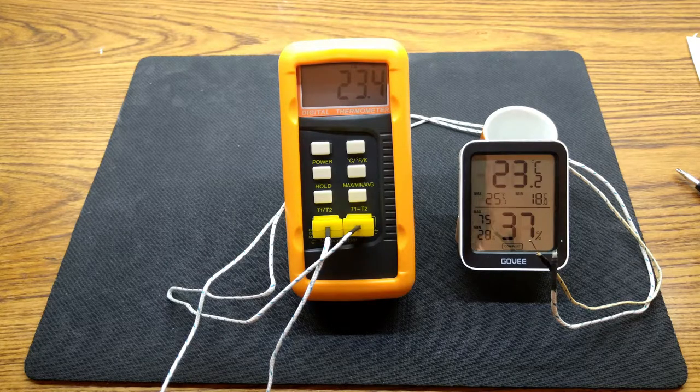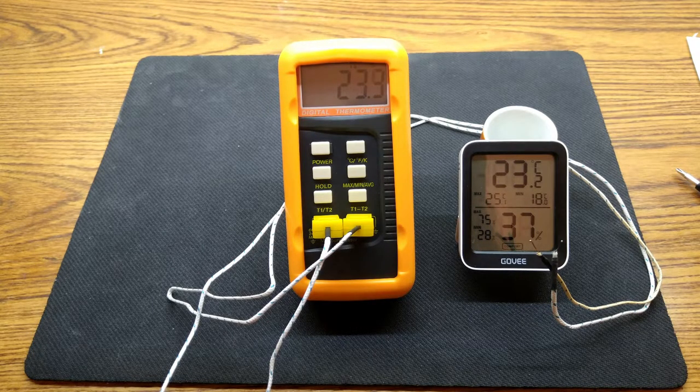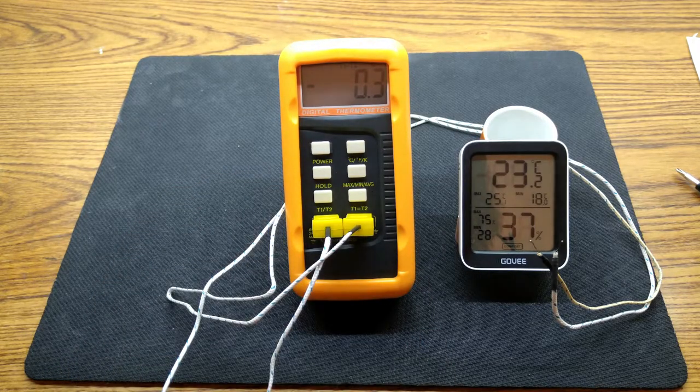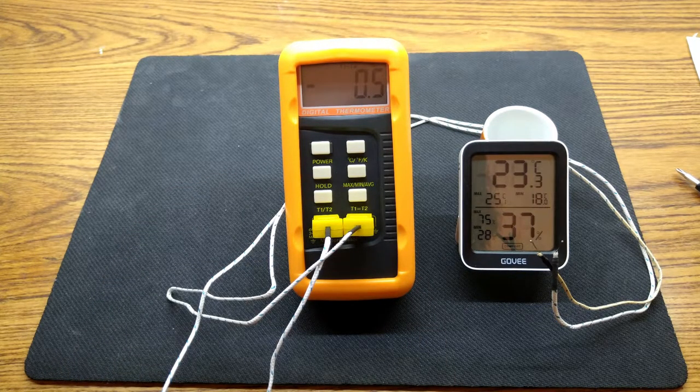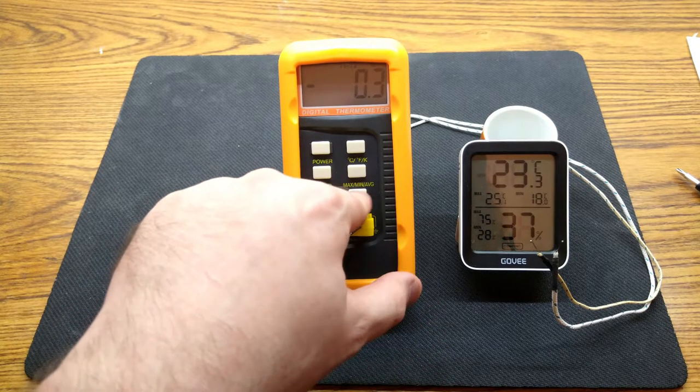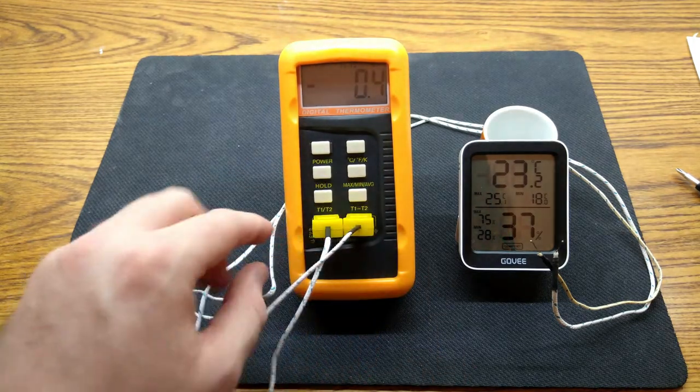So if we have both thermocouples at ambient, we can see the temperature displayed is not the same for both of the probes. There is approximately 0.3 to 0.5 degrees Celsius difference between them. This could be due to either the probes or the internal circuitry, or a combination of both.